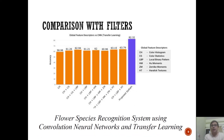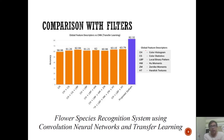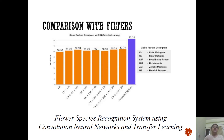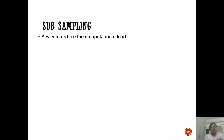A conference paper demonstrated this: using standard handcrafted features like color histograms, color statistics, local binary patterns, and Hu moments, they tried eight different combinations and measured classification accuracy. CNN achieved much higher accuracy compared to all those combinations, as shown in their results.